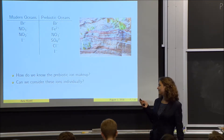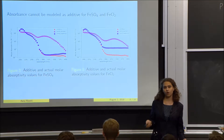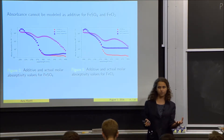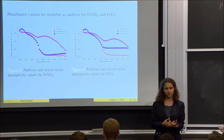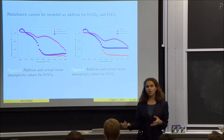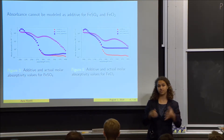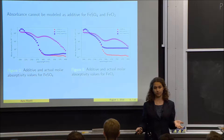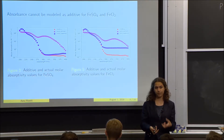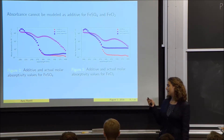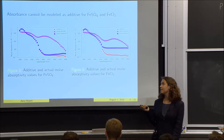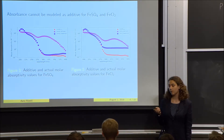Once we identified those ions, the question arose: can we model the absorbance of compounds dissolved in the prebiotic ocean as additive? Generally, you can take the absorbance for a cation and an anion and add them together, since there won't be significant interaction between ions in water. But when we modeled iron sulfate and iron chloride, we found this was not the case — absorbance could not be modeled as additive.